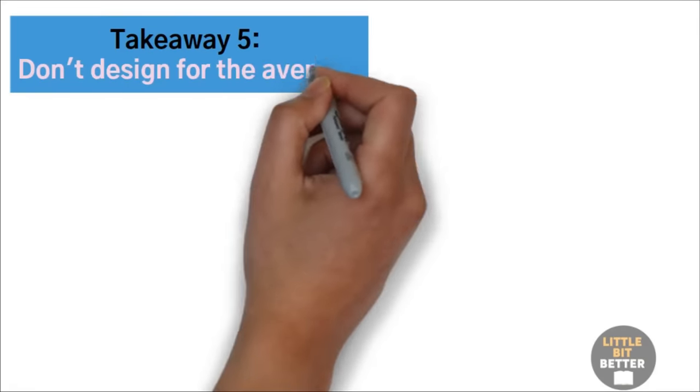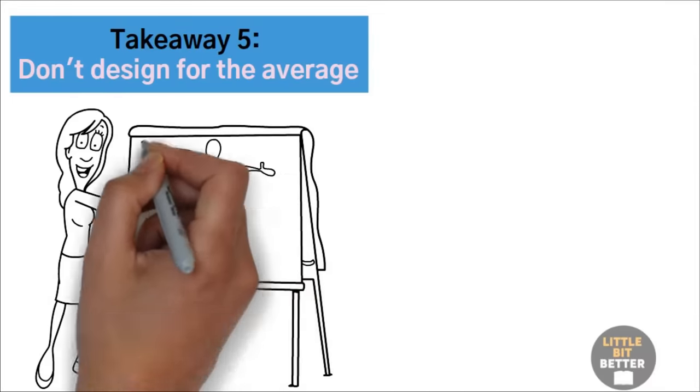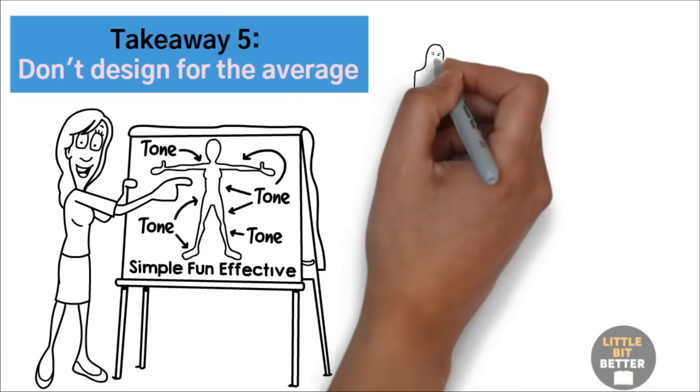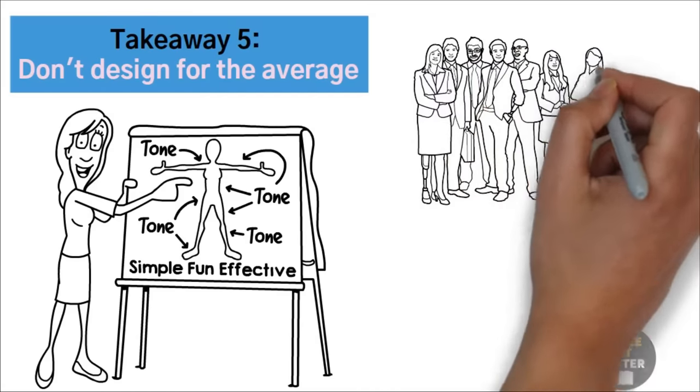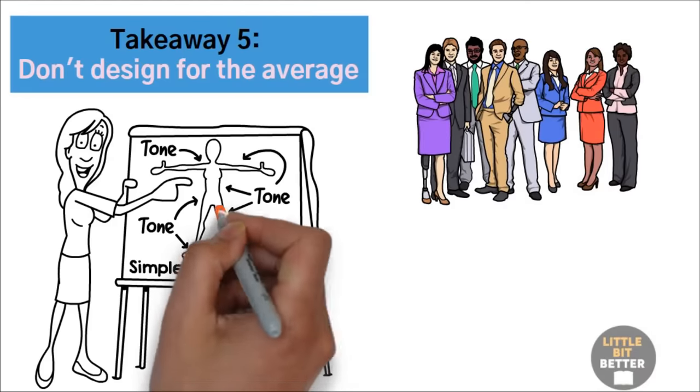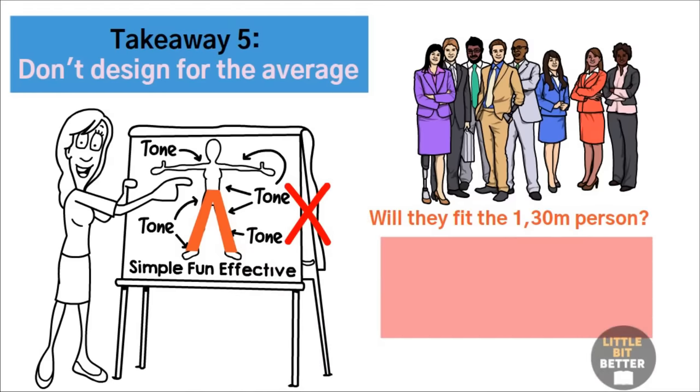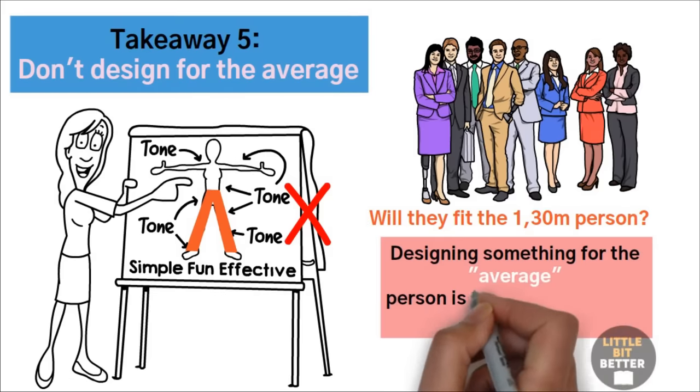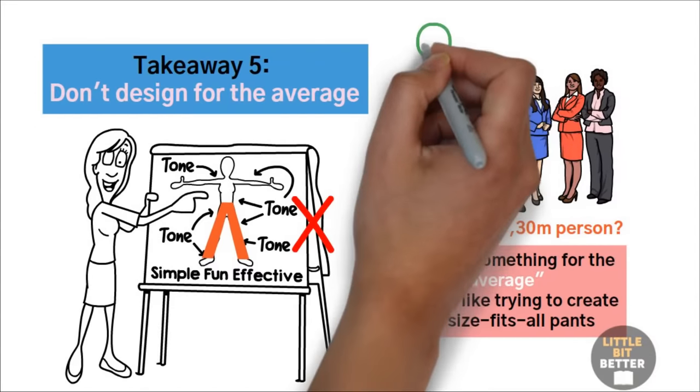Takeaway number five: don't design for the average. Designing for the average person may seem like a safe bet, but it can lead to failure. That's because almost nobody is actually average. Think of it this way: Some adults are 2 meters high. Others are 1.3 meters. This means that the average person would be 1.65 meters. If you design something, let's say pants, for example, for a 1.65 person, it'll fit them great. But will they fit the 2 meter person? Will they fit the 1.3 meter person? Probably not. And we're not even taking into consideration average weight. Designing something for the average person is like trying to create one-size-fits-all pants. It might fit some people okay, but in reality, it will fit very few people perfectly.